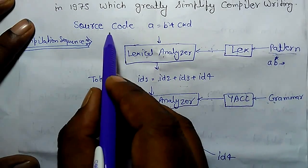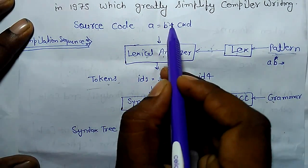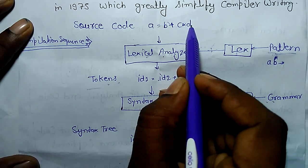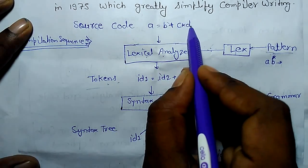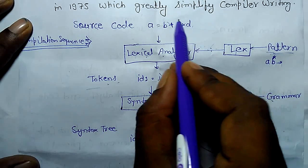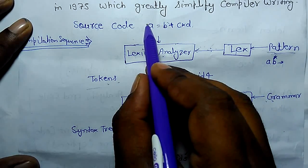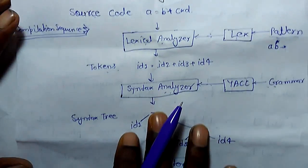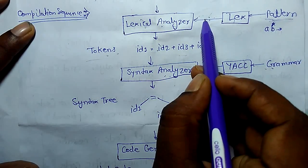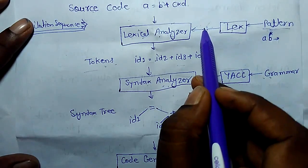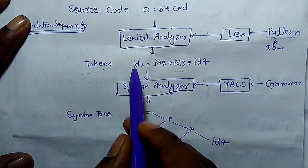Let's take example. There is a source code A equal to B plus C multiplied by D. In this operation, C multiplied by D should be first, then add with B and allocate value to A. So lexical analyzer takes output of LEX and creates tokens.